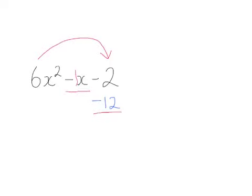In other words, we want to find two numbers that multiply to give 12 and we'll have a difference of 1. Obviously those numbers are 3 and 4, and because we have a minus, we'll have a positive 3 and a negative 4.